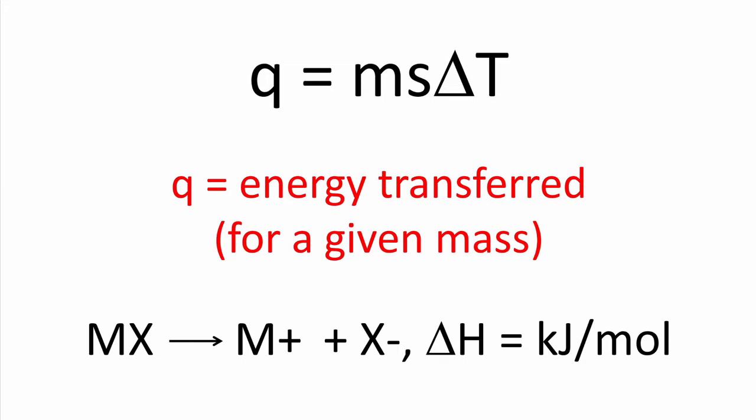The first equation, q equals ms delta t, will allow you to calculate q, the amount of energy absorbed or released by the chemical reaction. The assumption we're making is that all energy absorbed or released can be measured by measuring the change in temperature of the water.